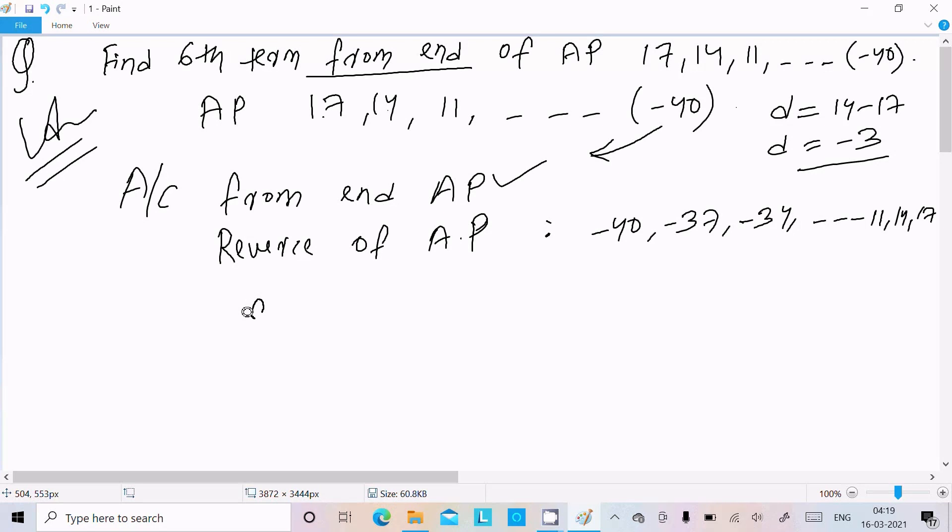After that, a is the first term. First term is minus 40. Difference, you need to calculate the second term minus first term. So here minus 37 minus minus 40, this will plus, and here this value is now d value, it comes 3.